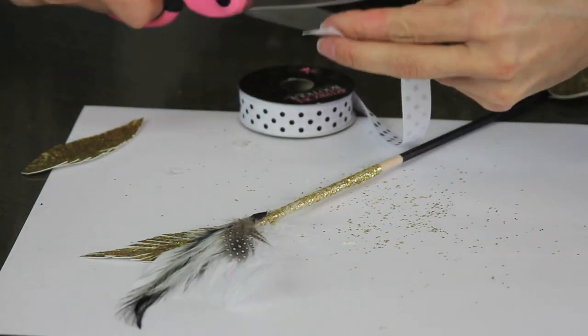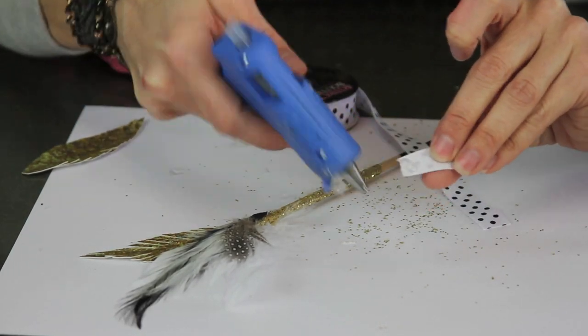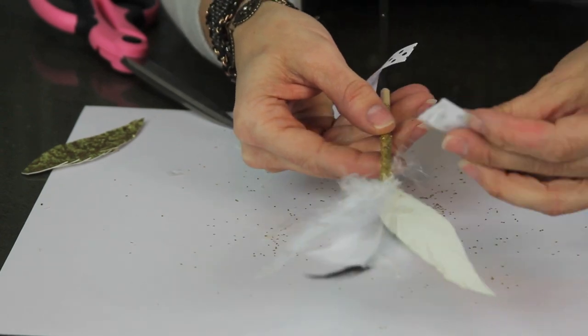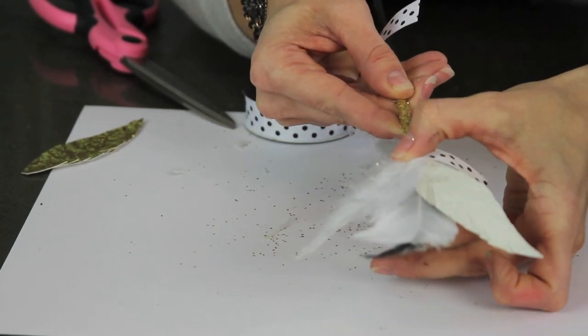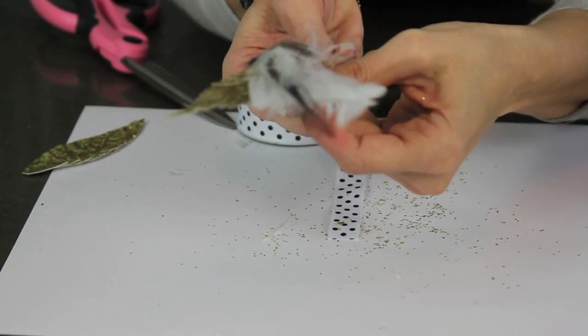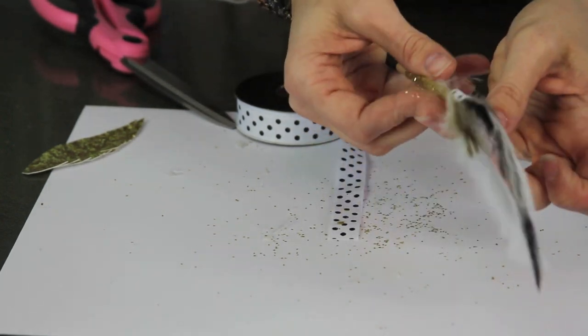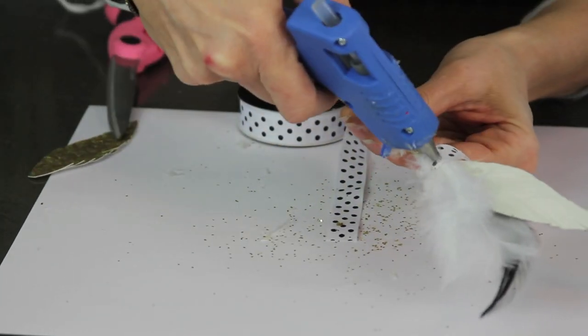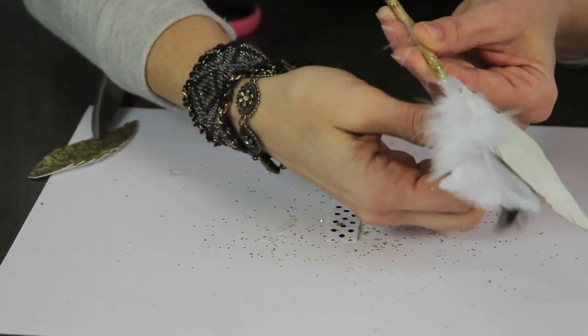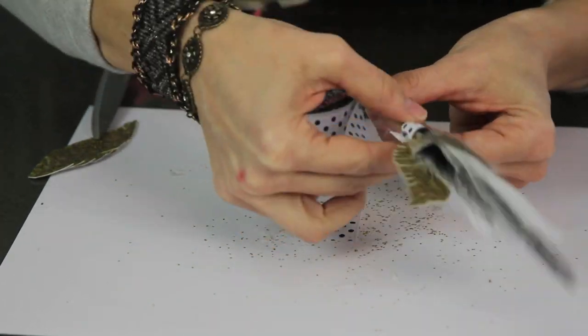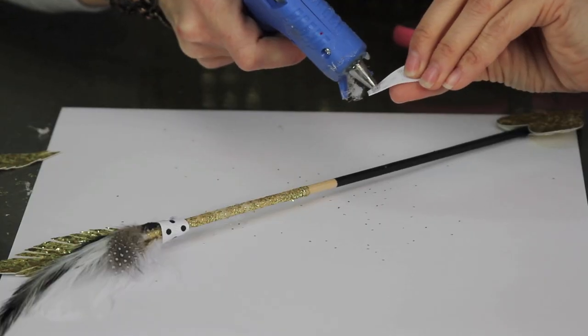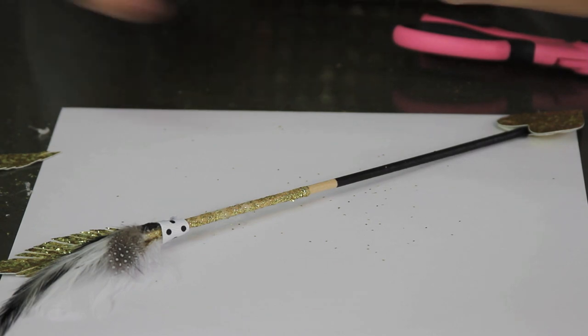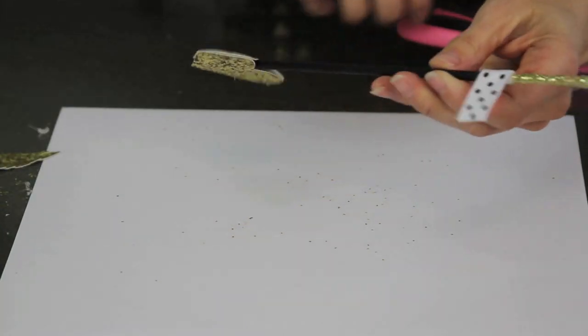Next you're gonna take your ribbon. I use this cute polka dot ribbon to cover up where I glued everything on to the arrow and I just took a piece, wrapped it around and glued and secured the end as well. And then last I took one more piece of small ribbon and I glued that on where we had our tape.